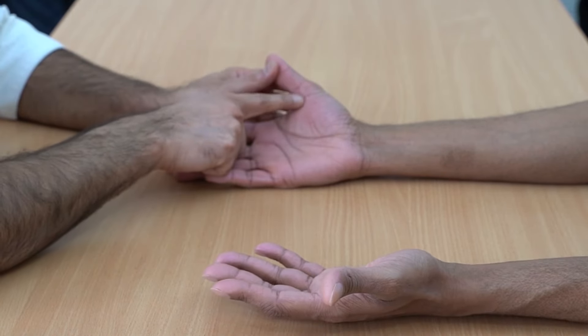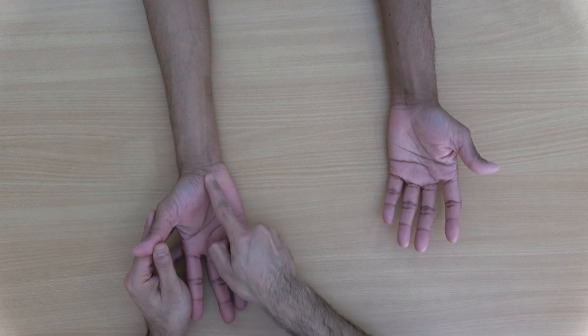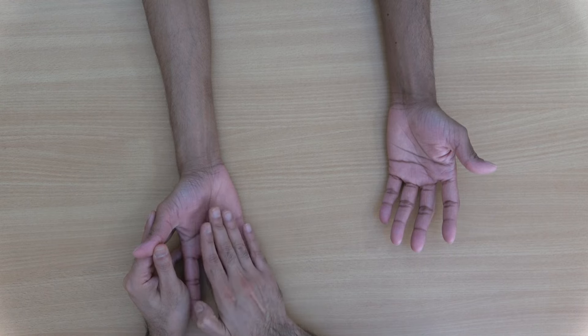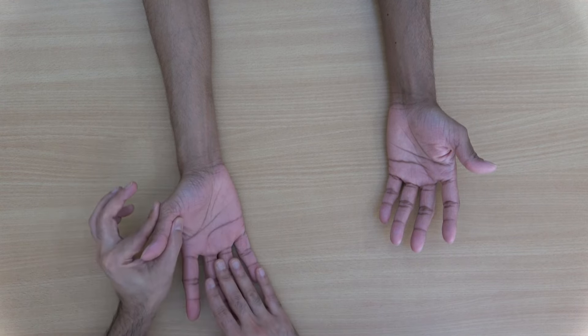We also look at the thenar eminence muscle bulk which can be lost because of disuse as they are using the hand less and less, especially the thumb less and less.